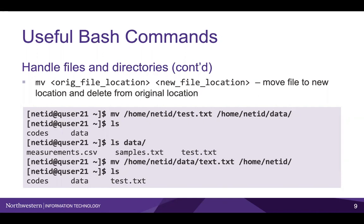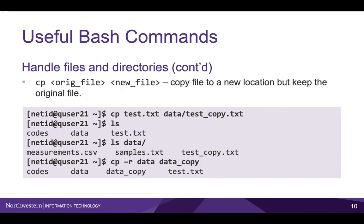In the example on this slide, we move the test.txt file to the data directory and move it back to its original location. The second command to move files is cp, which stands for copy. This command is followed by the same arguments, but differs from mv in that the original file isn't deleted, which makes cp a safer command to execute. In the example, we copy the test.txt file into the data directory. You can also use cp on directories by adding the -r flag.